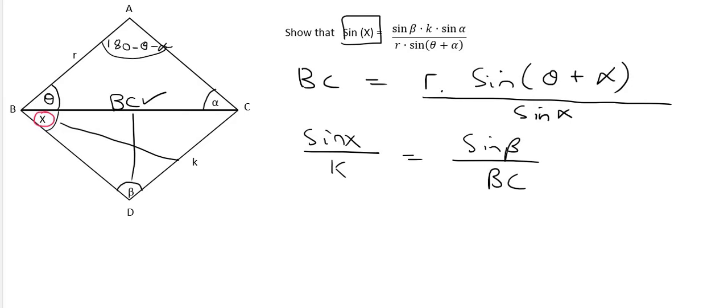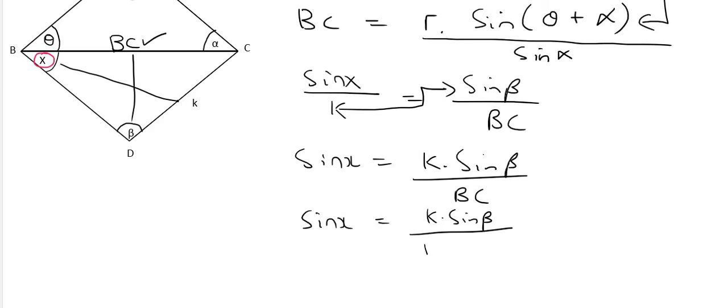Now we're trying to get sin x by itself. So let's do that. The way I'll do that is I'll multiply this k up to the top. So that's going to give you k sin beta over BC. Notice I'm calling it BC for as long as I can because I don't want to have to write all this stuff down the whole time. Now, okay, but now we are at a position where we will have to fill in what BC is. So we've got k sin beta at the top. And then BC is going to be equal to r times by the sin of theta plus alpha, and then that's going to be over sin alpha. And then I'm just going to make this line a little bit longer because that's our main divide line.